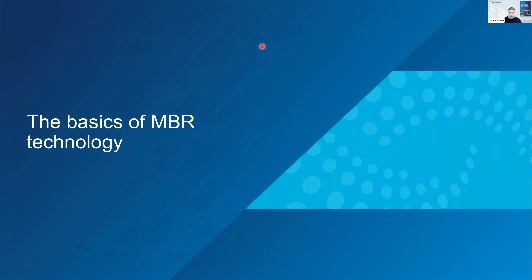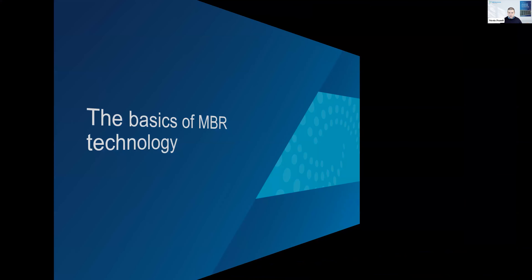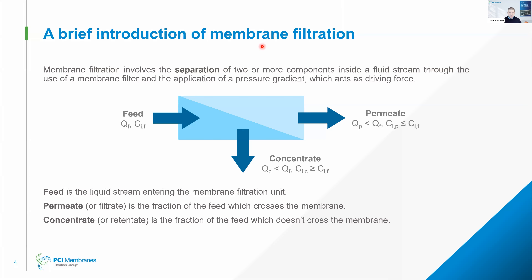Starting with the basics — probably something that most of you already know, but at least we are all on the same page. When we are talking about membrane filtration, it's about separating the liquid stream into two components: permeate and concentrate. In the permeate, we have a lower concentration of the species we want to separate than in the feed.